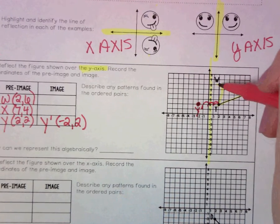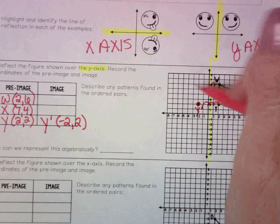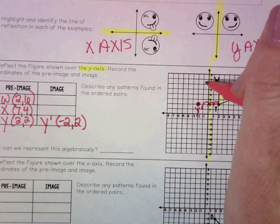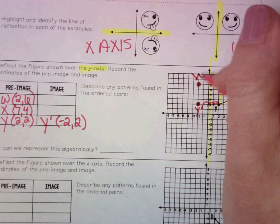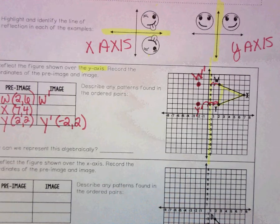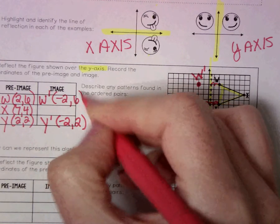Let's look at w. W is also 2 units away. So I'm going to go to my y-axis, count 2 units away, boom. There is w prime. W prime is now at (-2, 6).